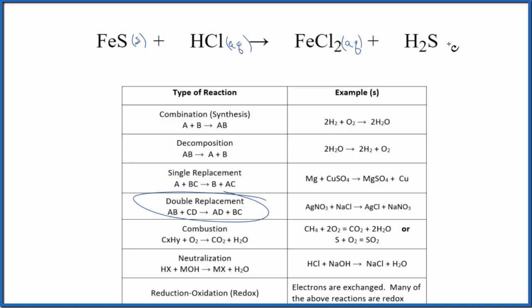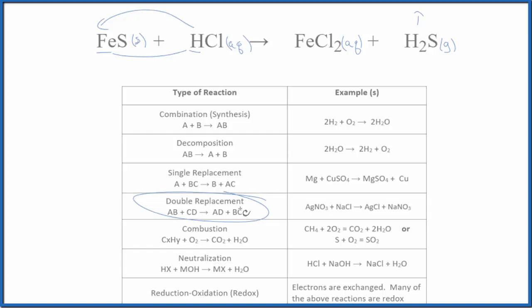H2S is going to be a gas, a very bad smelling gas, so that's going to bubble out of our solution. Those are the states in our double displacement reaction. The key here is that the positive ions, the metal and the hydrogen, switch places, which gives us the double replacement reaction.